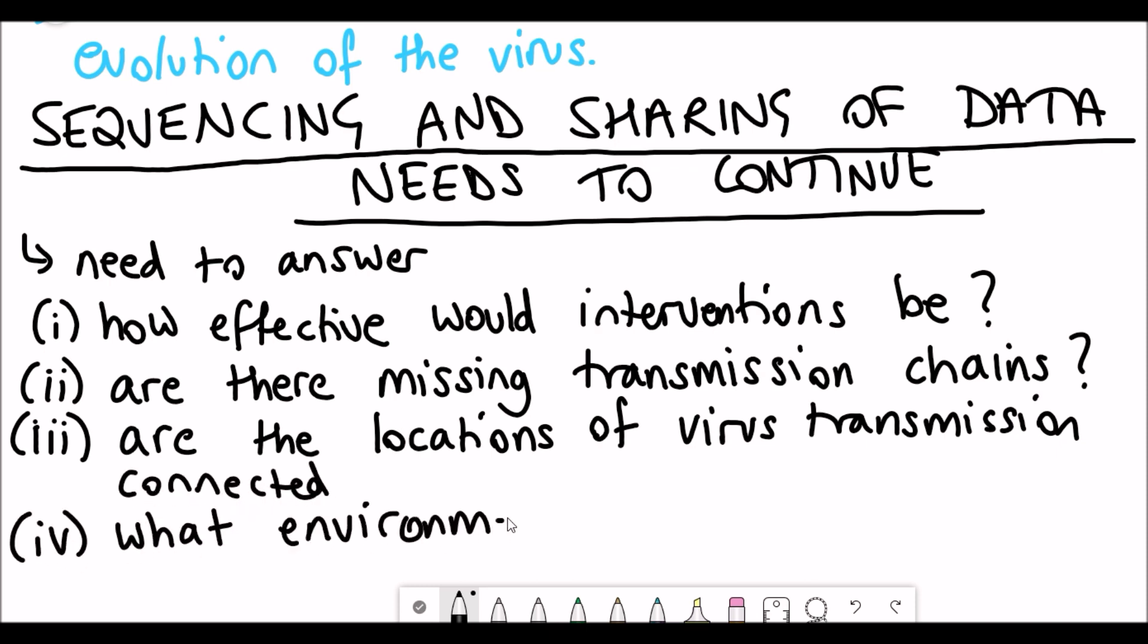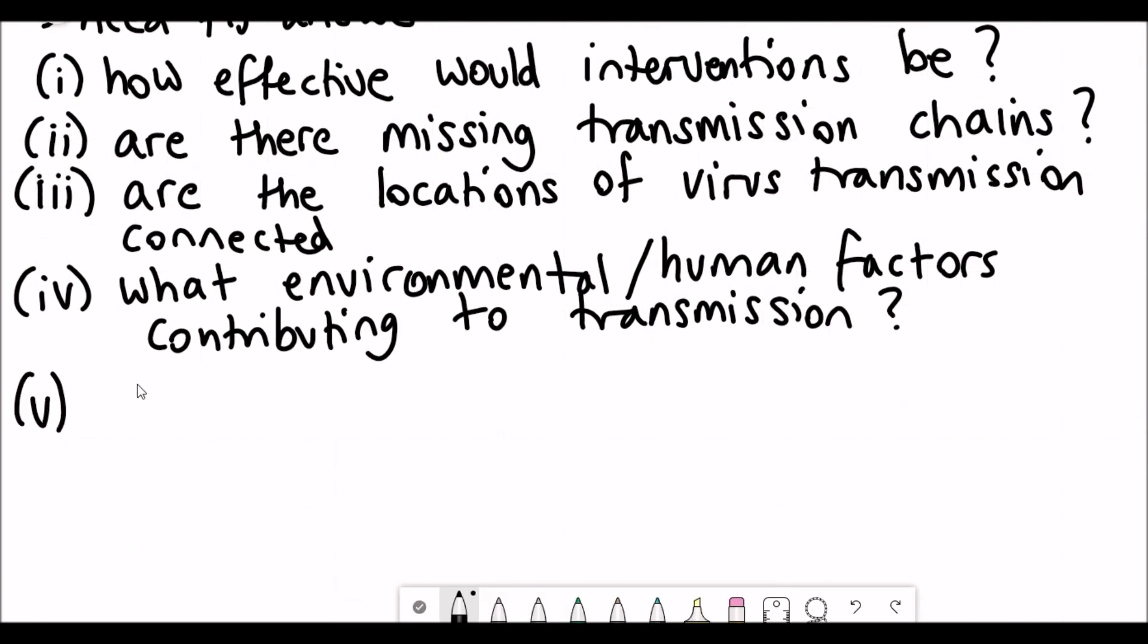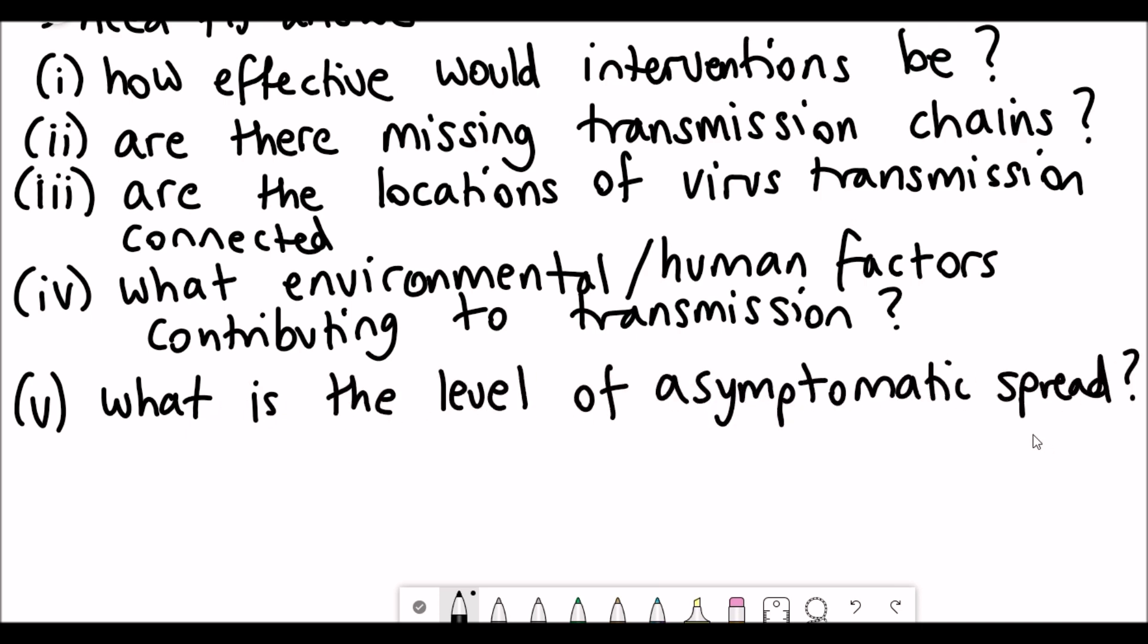And more on from this point, are there any environmental factors or human factors that may be influencing the spread of the virus between different people? And other important questions to address is what is the spread of asymptomatic viral transmission? And more on from that, how long does someone have to have the virus before they develop any symptoms?